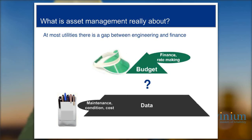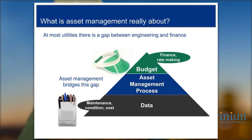The purpose of asset management is to solve this problem that virtually every utility faces. There's a lot of information and knowledge at the level of maintenance, operators, and engineers — they understand their system very well. The trouble is they have a hard time explaining the need for spending in a way that resonates with non-technical stakeholders. Asset management bridges this gap, translating technical understanding into a cost-benefit analysis that speaks to non-technical stakeholders.